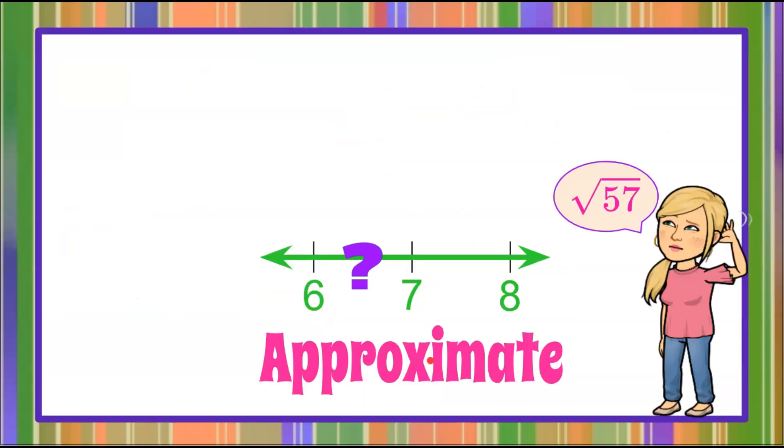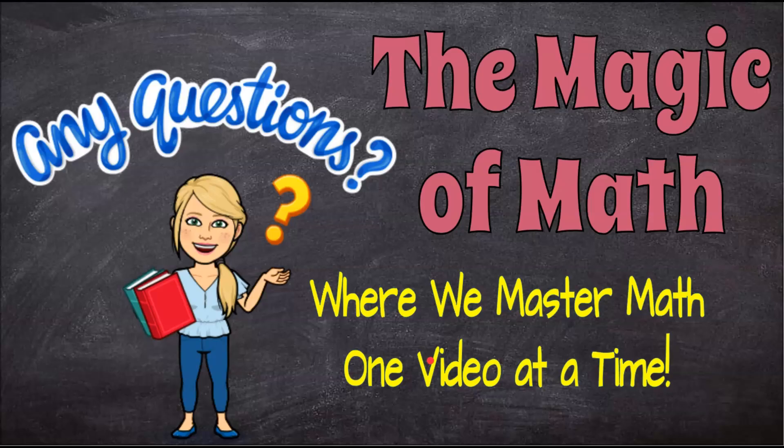And that is how you approximate a square root on a number line between two integers and how to determine which one it is closest to. And that is the magic of math where we master math one video at a time. Thanks for joining me today and I hope you come back soon.